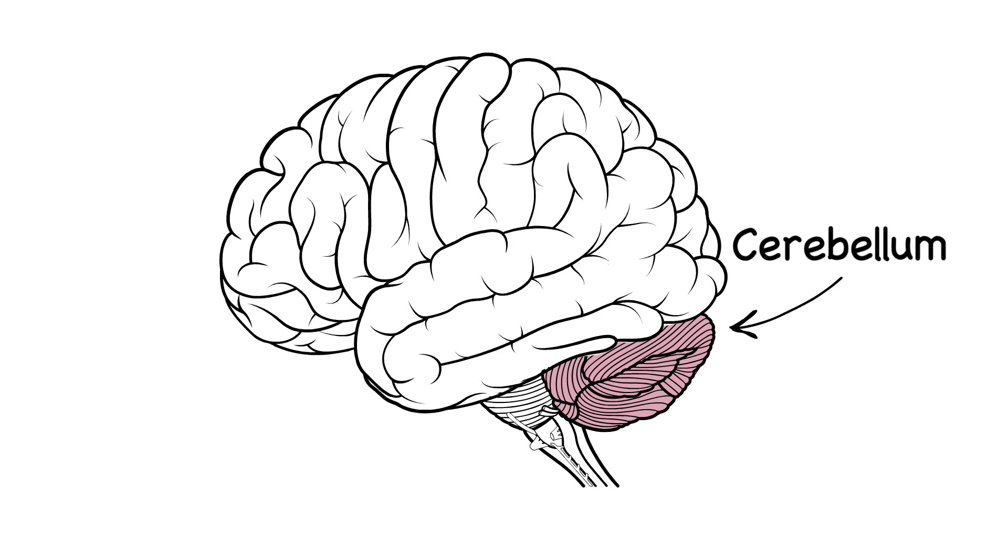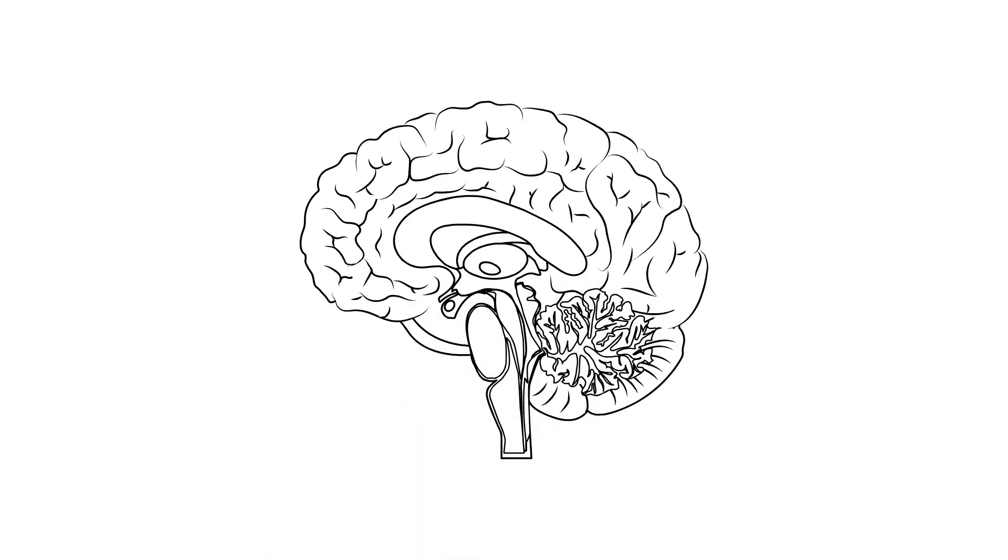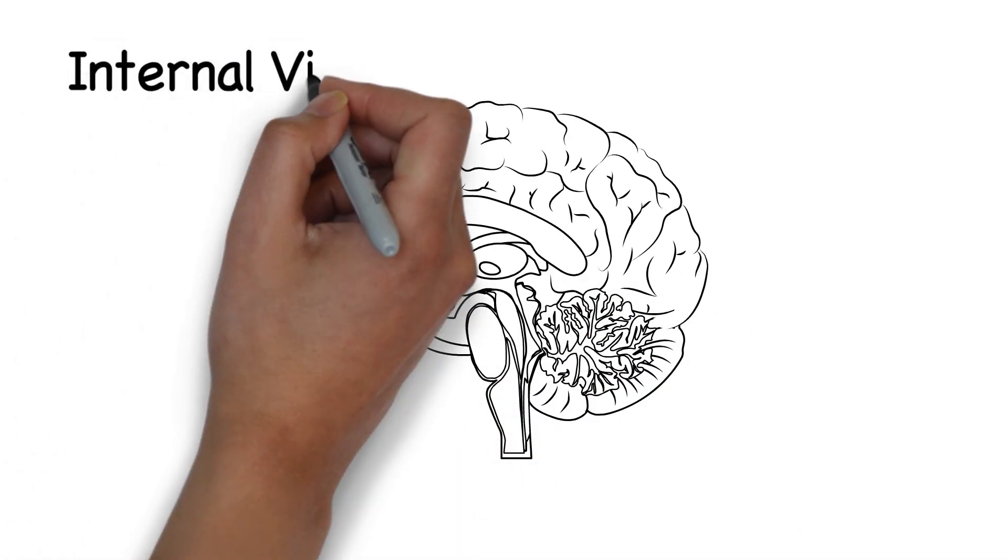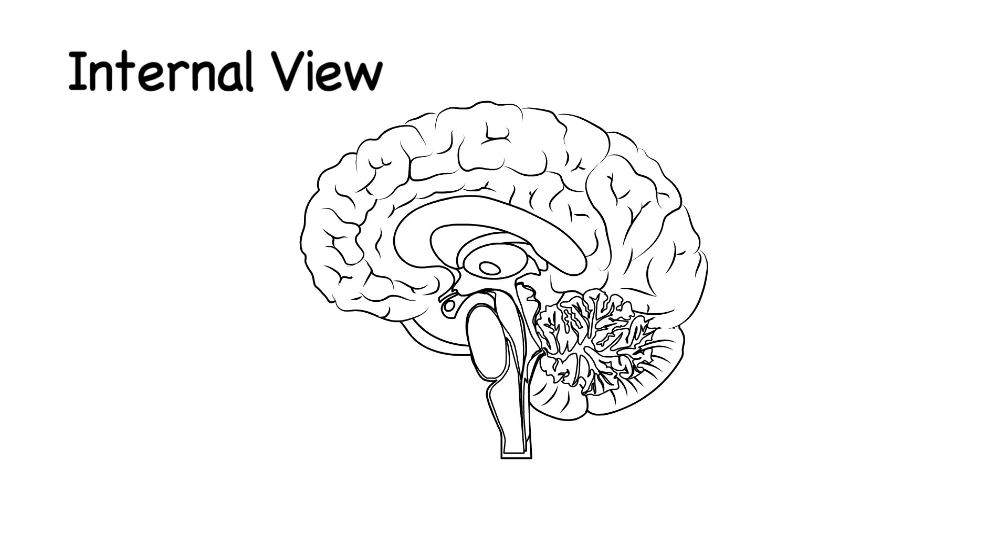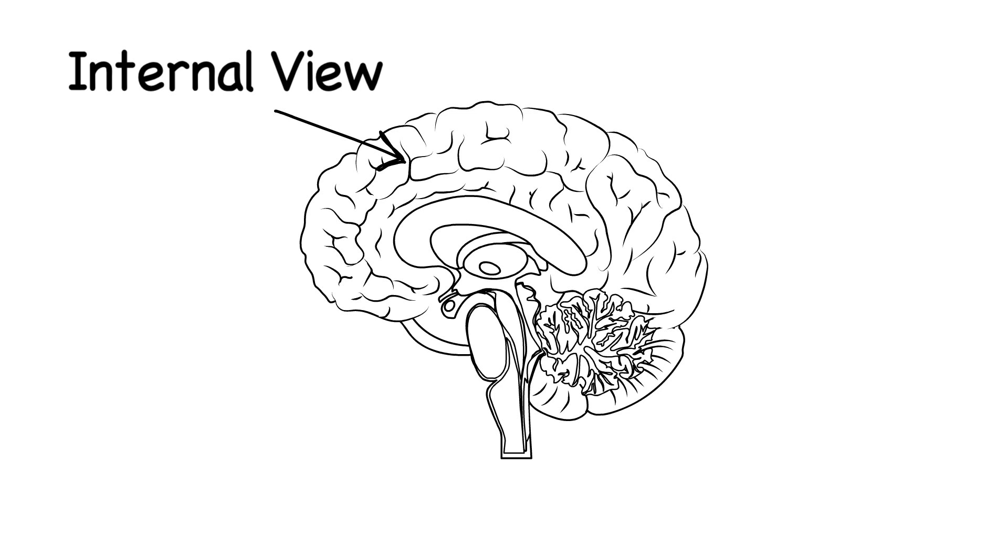So far we've looked at the external structure of the brain, but there is more to explore in the internal structure. As you can see, the folded appearance of the brain comes over into the internal surface that goes down between these two parts of the brain.